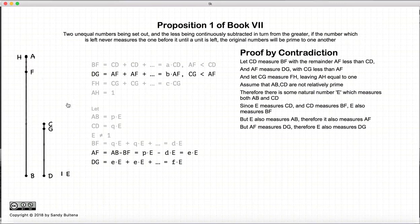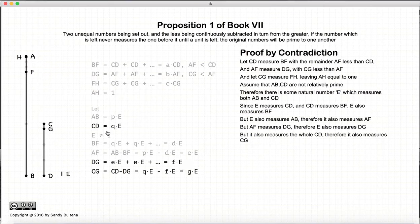And continuing along, since AF is measured by E, and AF also measures DG, then DG is also measured by E. But CD is measured by E, and if DG is measured by E, then since CG is equal to CD minus DG, again, basic arithmetic, we have that CG is measured by E.